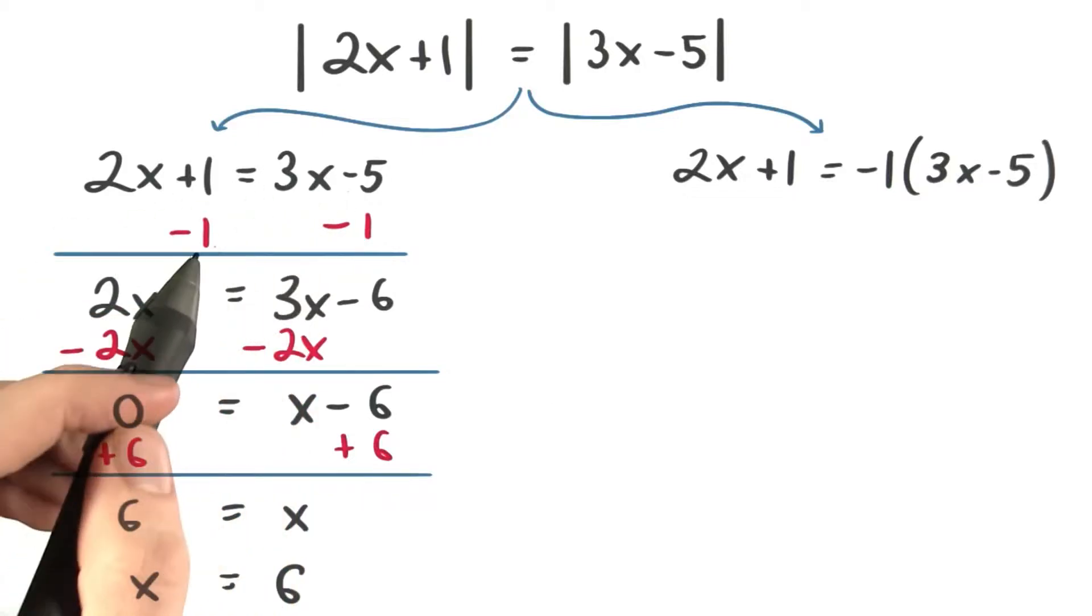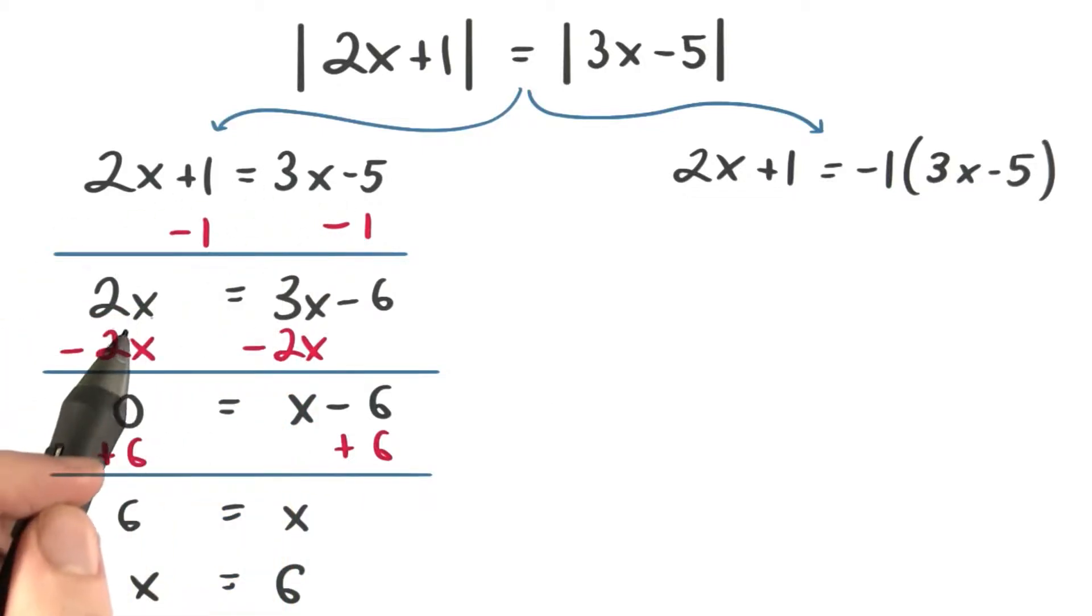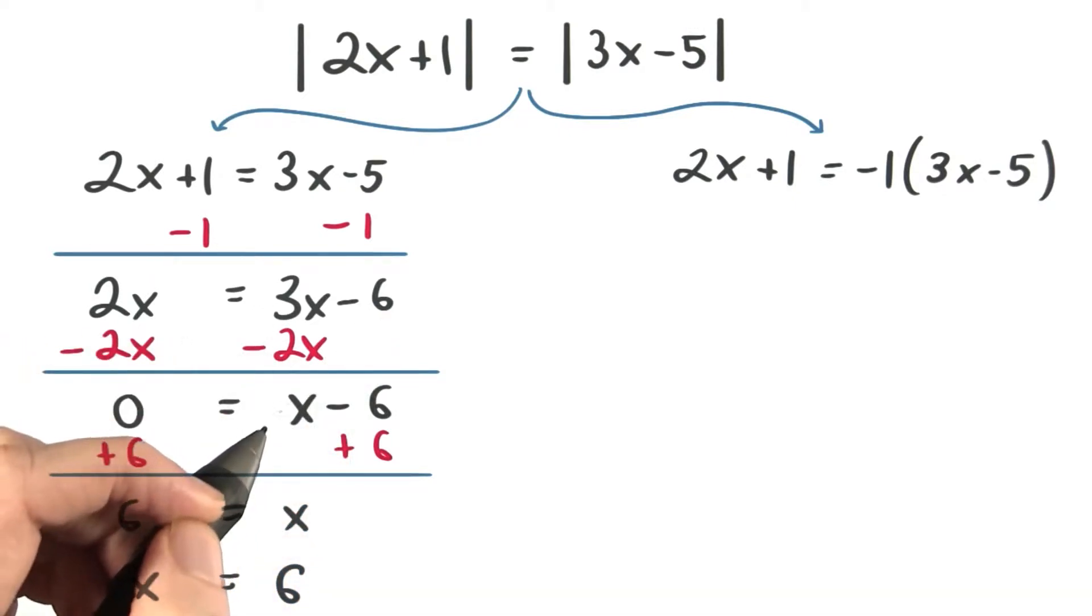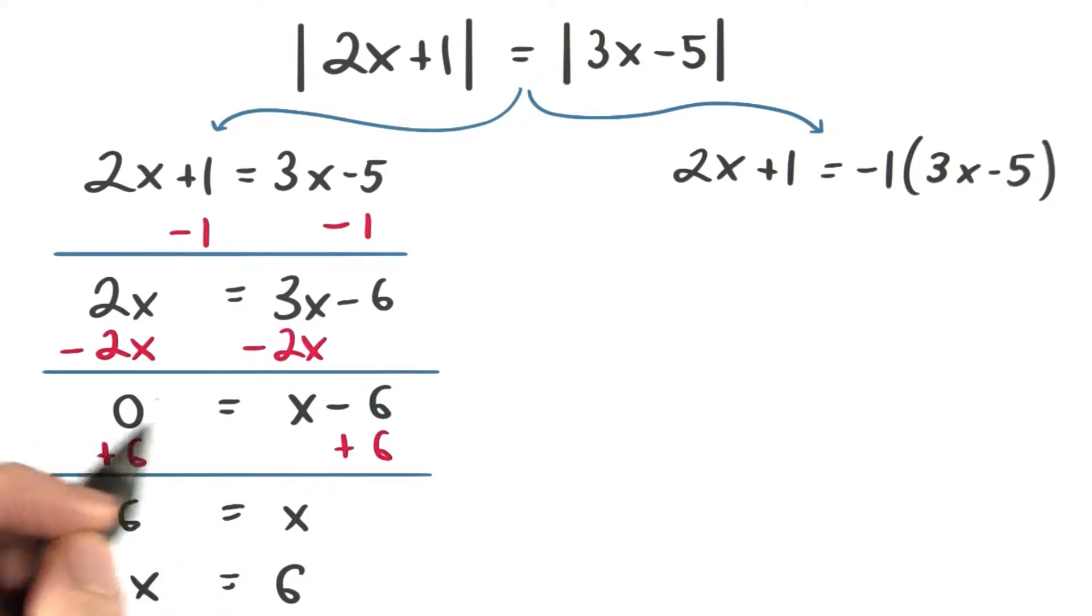To solve this first equation, we can subtract 1 from both sides and get 2x equals 3x minus 6. Next, we can subtract negative 2x from both sides to keep our x variable positive. You know positive 2x and negative 2x sum to 0, so we need to make sure we have a place value over here.